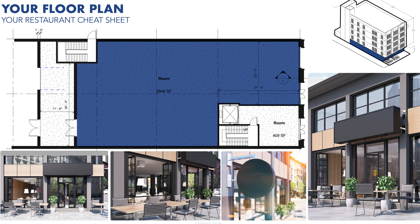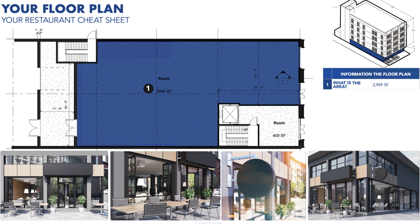With the floor plan, you can pinpoint the total area of your restaurant space, map out room dimensions, measure the linear frontage, determine kitchen space for equipment and countertops, allocate square footage for different areas like dining, bar, and kitchen, and identify the vertical shaft's location and size — crucial for ventilation without disturbing neighbors.